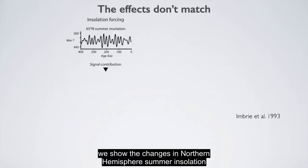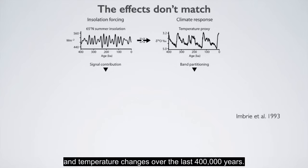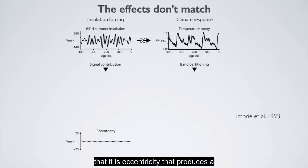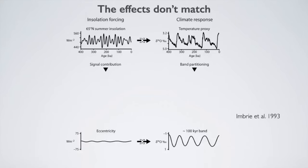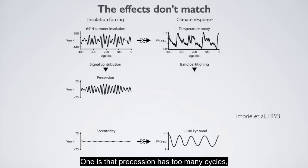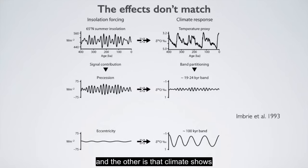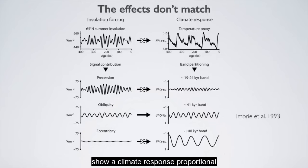In this figure, we show changes in northern hemisphere summer insolation and temperature changes over the last 400,000 years. Most researchers believe that it is eccentricity that produces a 100,000-year cycle. The problem is that eccentricity produces very small changes in northern hemisphere summer insolation — the cause and effect is not linear. Others think it is precession, but we have two problems: precession has too many cycles, and climate shows little response to changes in precession. Again, the cause and effect is not linear.